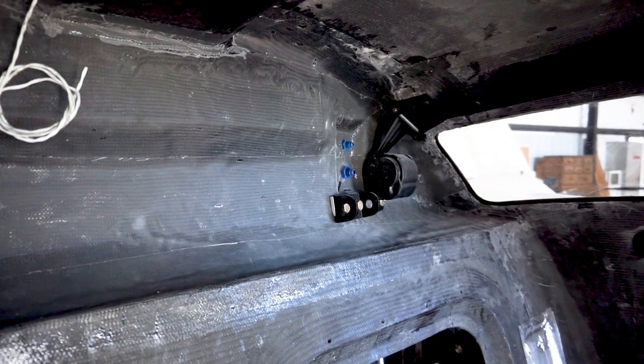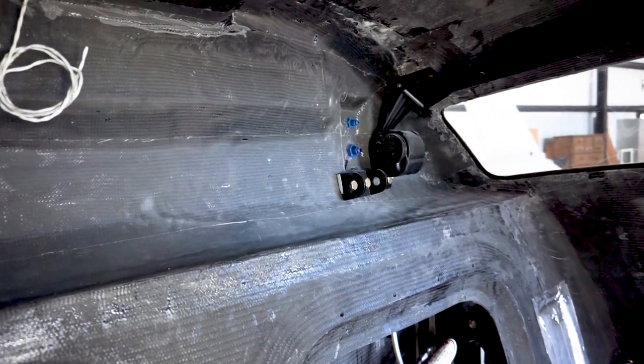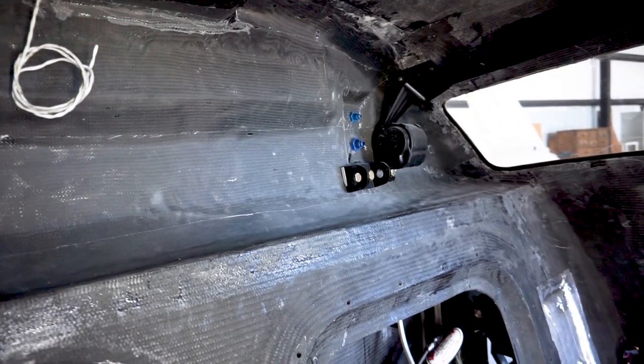Up the back there, those little blue valves coming through, one goes to a pressure sensor for cabin pressure and the other one is the actual feed for the air coming in to pressurize the cabin.